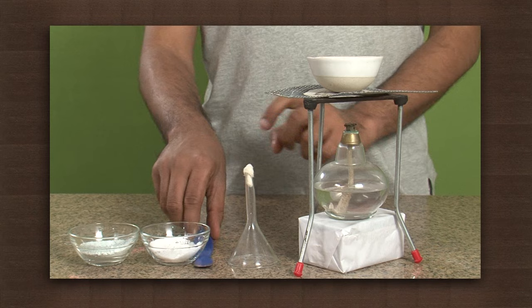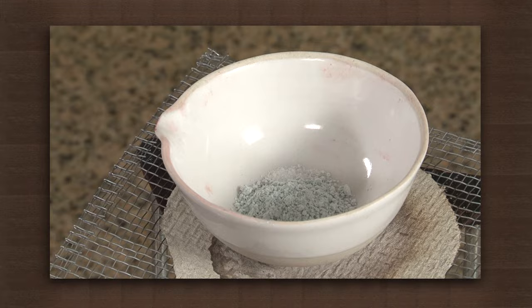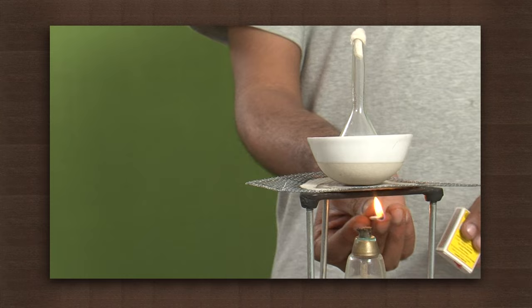Mix the ammonium chloride and chalk powder and put it in the evaporating dish. Now place an inverted funnel over the china dish. Heat the mixture.